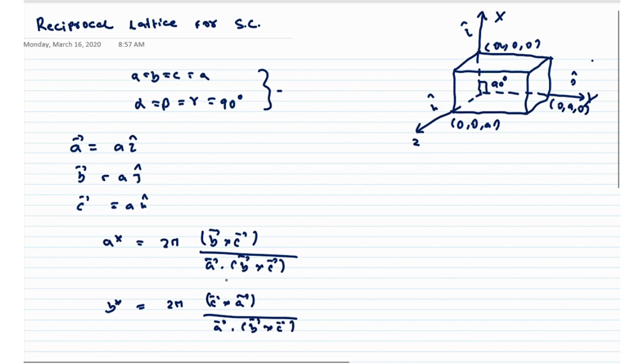This is because a dot b cross c is the volume of the parallelepiped, and b cross c or c cross a are actually the area of the parallelogram. When the cross product is there, we know that this is going to be perpendicular to the plane containing b and c. That implies we have 1 by dh scale n-cap, and this is how we proceed.